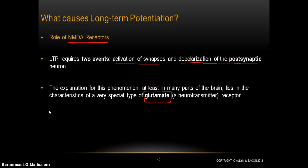We're back, and we've talked about what long-term potentiation is. It's a strengthening of the synapse between two neurons. The really molecular basis for all learning and remembering is the strengthening of synaptic connections. We've sort of seen what it looks like, but we haven't fully explained why it happens, and so that's what we're going to start to get into in this video.